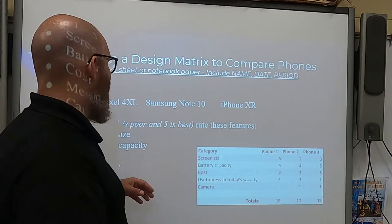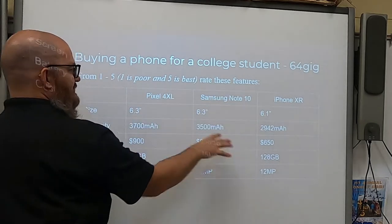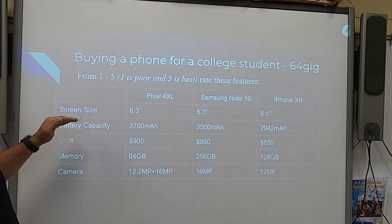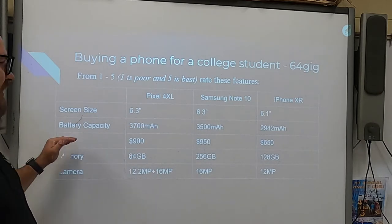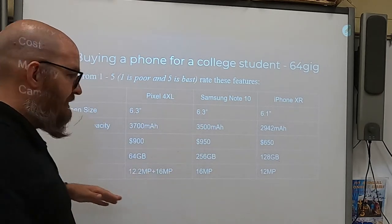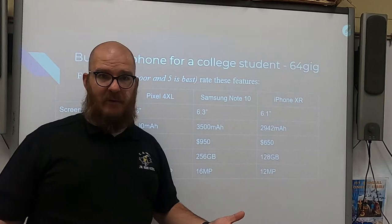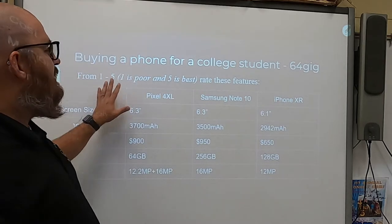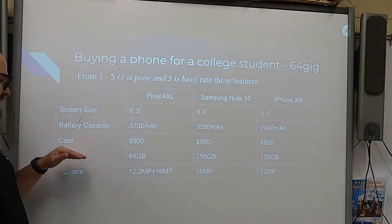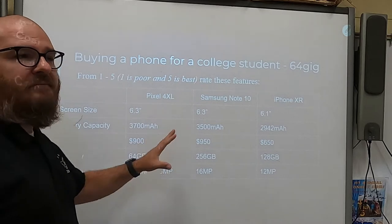So on a sheet of notebook paper, what you're going to do is copy down this decision matrix chart and we are going to use this chart. I've already worked out the screen sizes, the battery capacity in milliamp hours, the cost in US dollars, the memory at each model, and then what kind of camera it has — because being a college student you probably want to remember what happened. So with this, you can now take this information; you'll have to find this for your paper airplanes. Whatever criteria you pick, your features of your airplane, you're going to have to make that decision on what you're going to rate as a team.